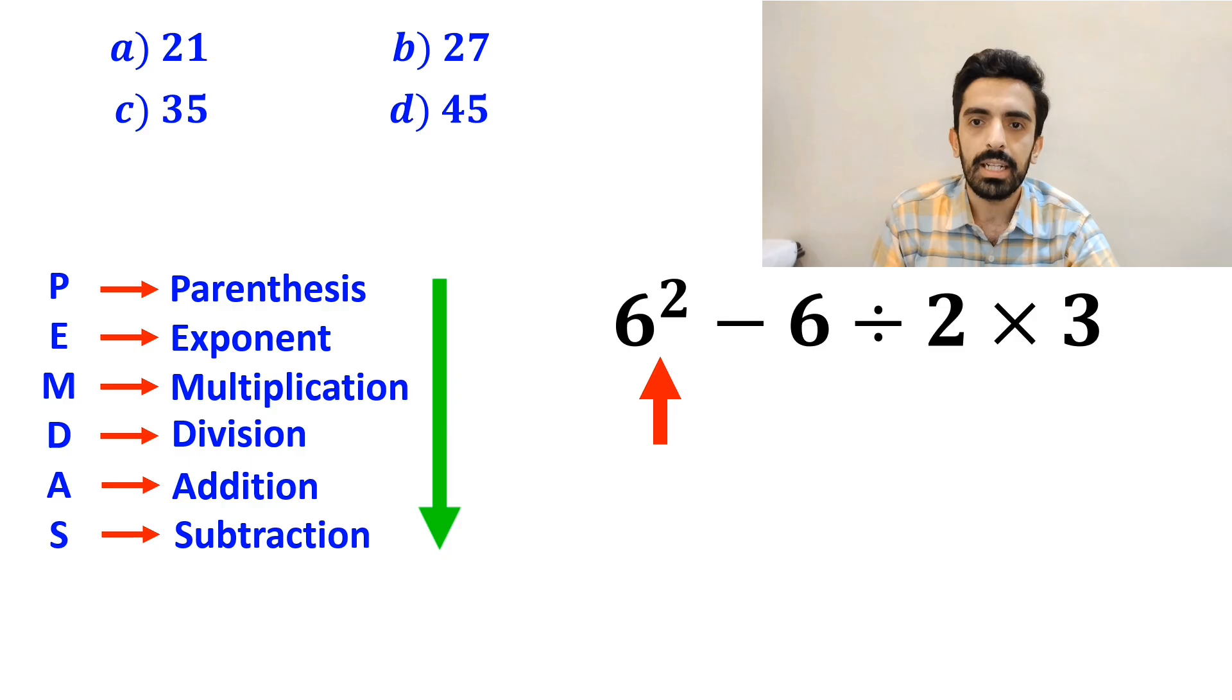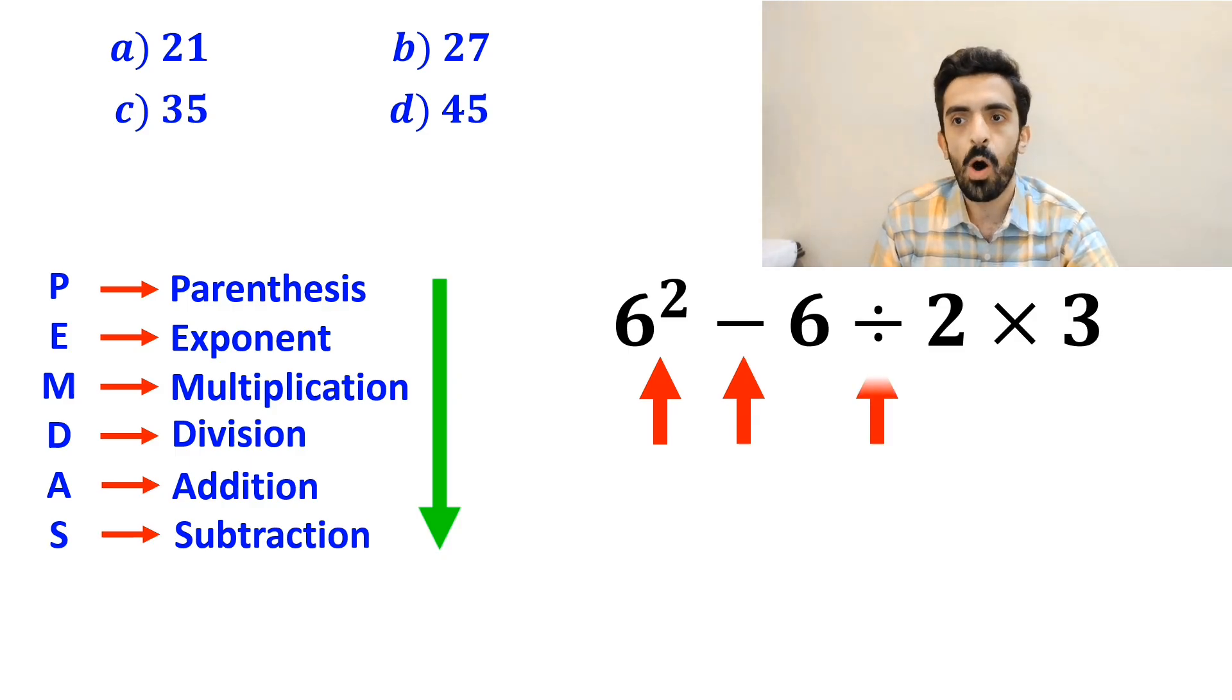first we have an exponent, then a subtraction, followed by a division, and finally a multiplication.